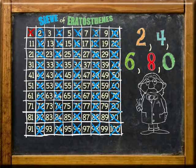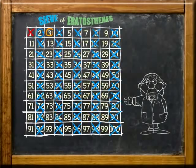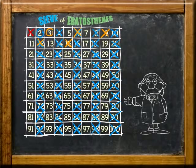Next let's put a circle around 3. It's a prime number because it is greater than 1 and is only divisible by itself and 1. Next, we'll want to cross out all of the multiples of 3. To find the multiples of 3, you can skip count by 3. For example, 3, 6, 9, 12, 15, and so on.